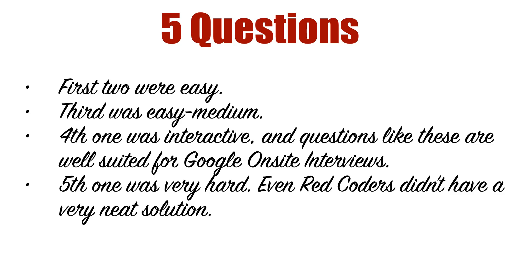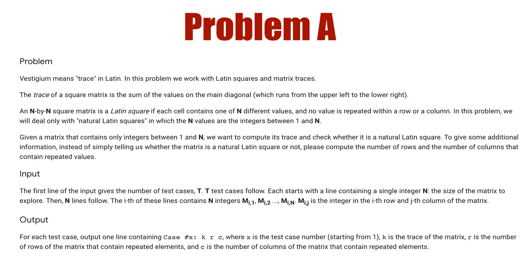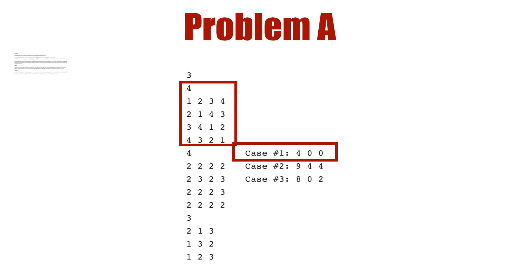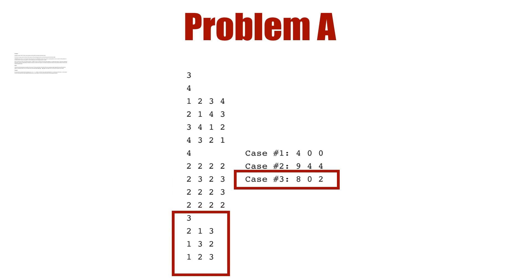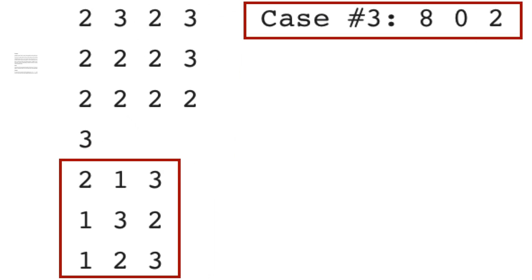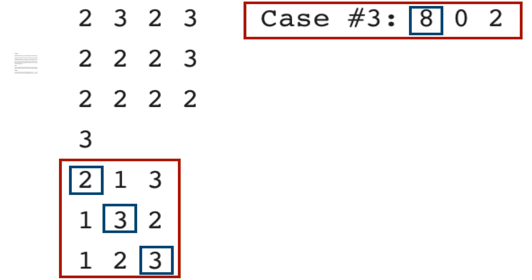Problem A was about matrices and was really easy. To save time, I have the sample test cases on screen. There are three sample cases with three inputs and three corresponding outputs. Given a matrix, we are supposed to print the trace, the number of invalid rows, and the number of invalid columns. For example, matrix rows 213, 132, 123 give output 8 0 2. The 8 is the sum of the main diagonal elements: 2, 3, and 3, which sum to 8 — that's the trace.